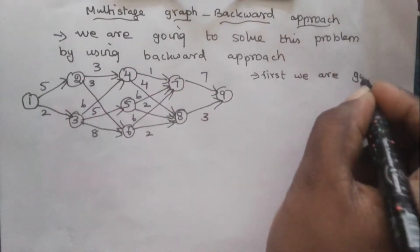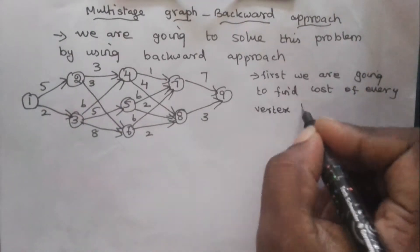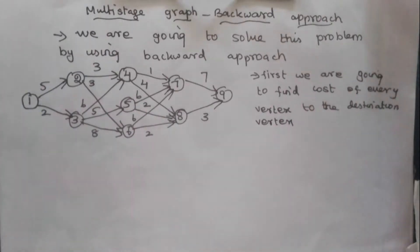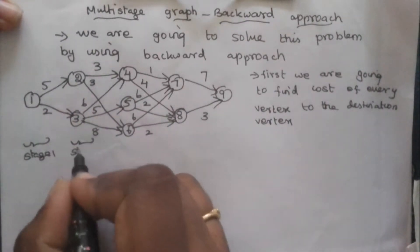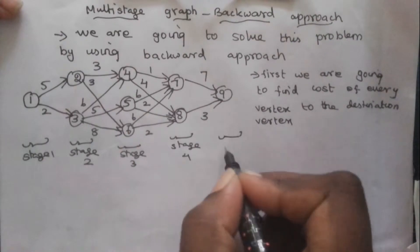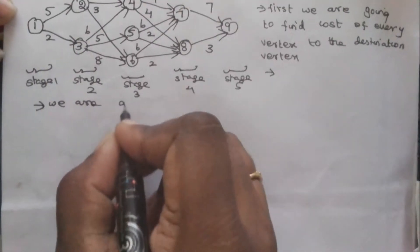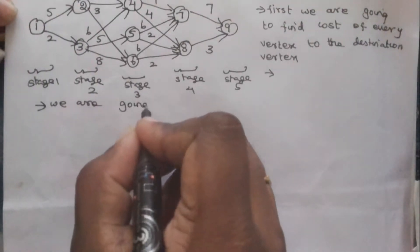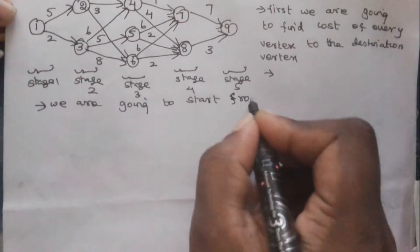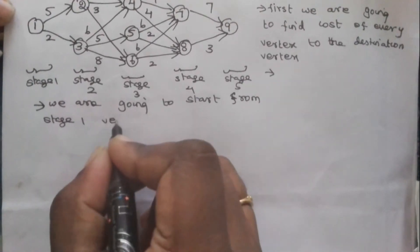First, we are going to find the graph. We are going to mark the stages in the graph. We start from stage 1 vertex, and in stage 1 only one vertex will be there. That vertex is called the source vertex.